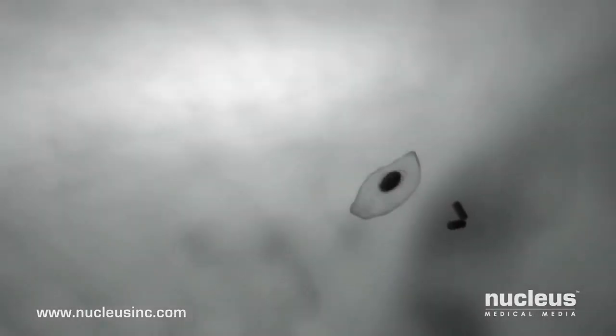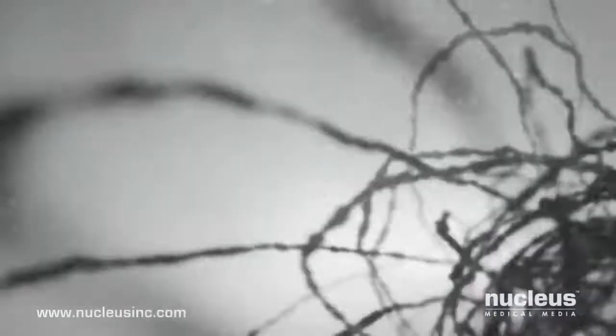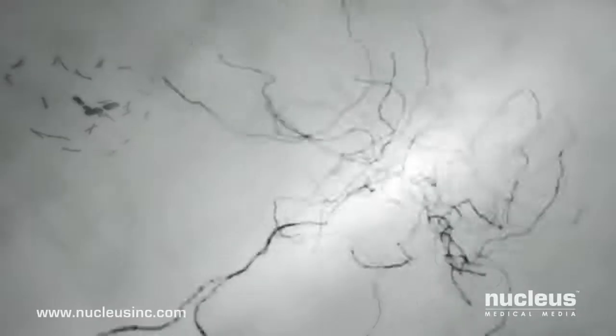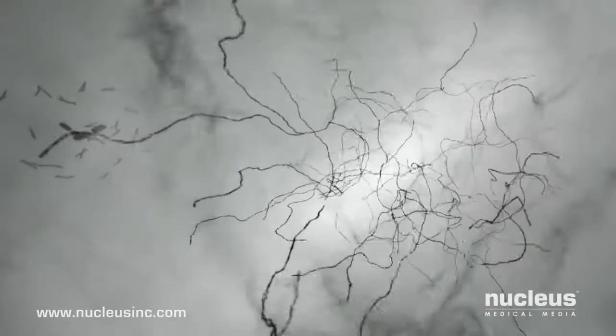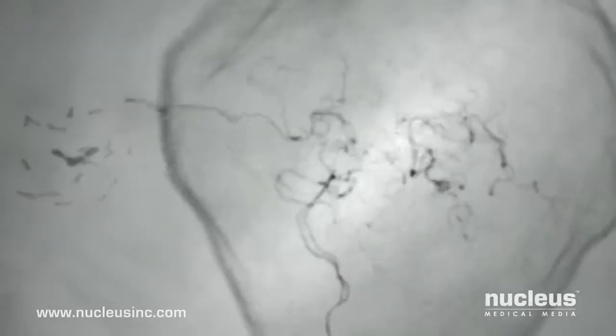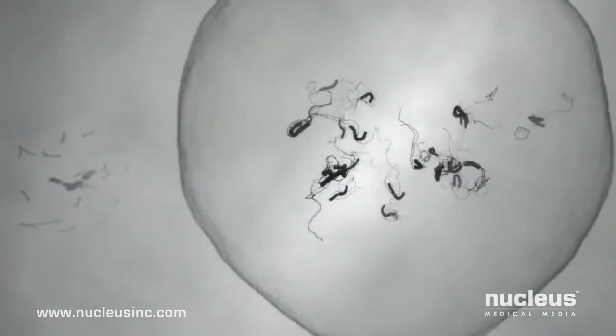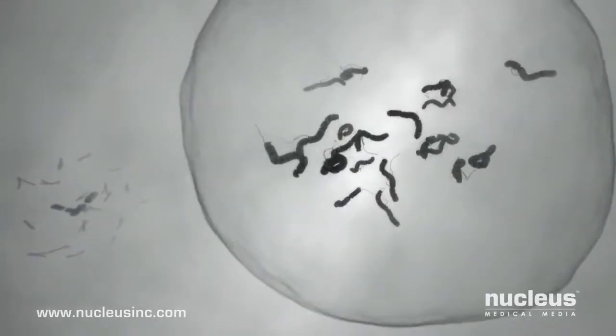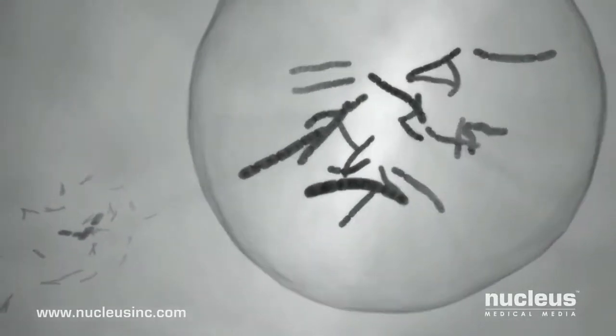Meanwhile, inside the egg, the tightly packed male genetic material spreads out. A new membrane forms around the genetic material, creating the male pronucleus. Inside, the genetic material reforms into 23 chromosomes.